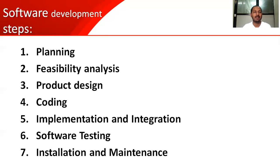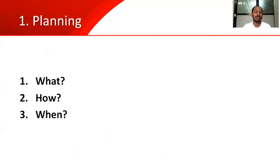Let us revise these steps: planning, feasibility analysis, product design, coding, implementation and integration, software testing, and installation and maintenance. For each step, a different team is responsible. Planning is done by one team, feasibility analysis by the next — if there is a problem, both teams sit together and replan. After that, the designer comes into picture, then coders take the design report, then implementation and integration, then testers, and finally installation and maintenance.